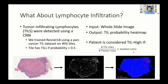What about lymphocyte infiltration? We perform tumor infiltrating lymphocyte prediction using a ResNet-18 CNN, utilizing a pan-cancer TIL dataset from the SALTS group. We input the whole slide image and receive a heat map of TIL probabilities, from which we select high-TIL tiles with a probability higher than 0.5. A patient is considered TIL-high if the ratio of lymphocyte tiles to tumor tiles is higher than the median ratio in the cohort.